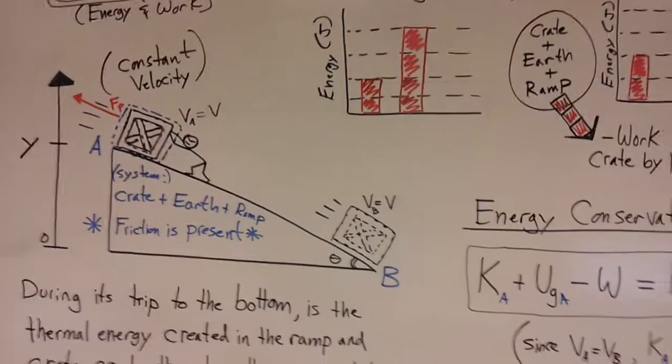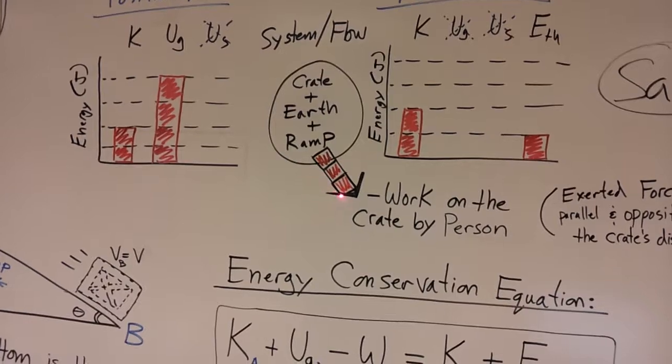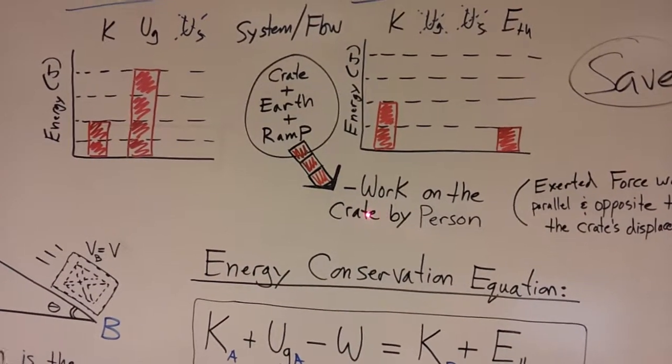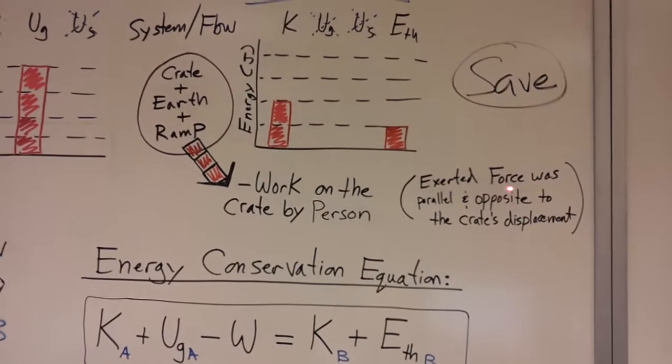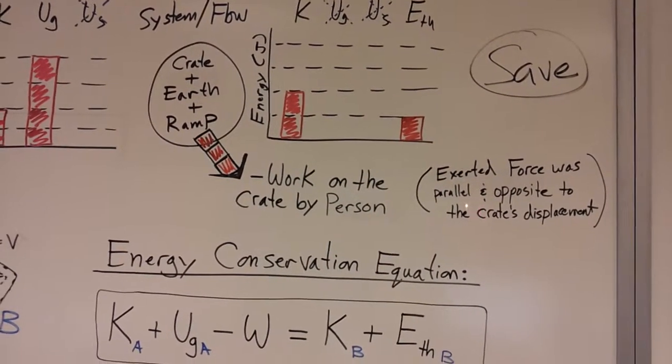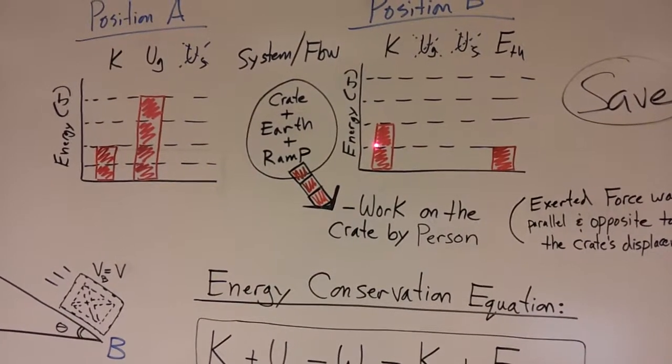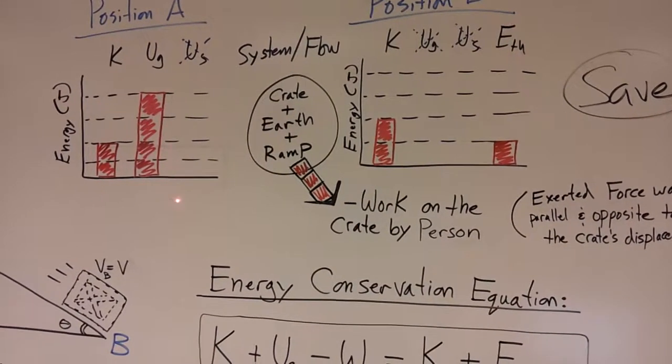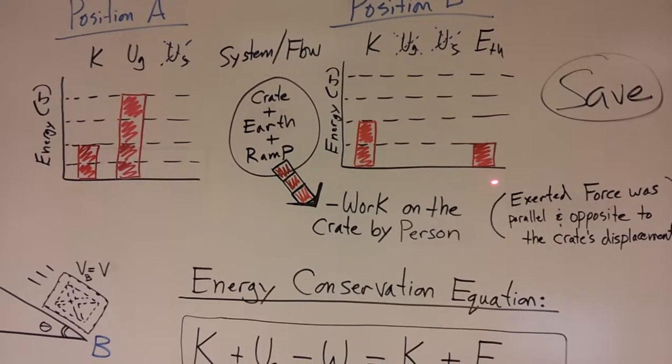There's negative work being done. So we'd say that there is energy leaving our system or transferred out, and this negative work is being done on the crate by the person. That's because the exerted force was parallel and opposite to the crate's displacement. So the kinetic energy remained the same, so there's no change in kinetic energy, but there's a big loss in gravitational potential energy, and some of that energy in the end is stored as thermal energy.